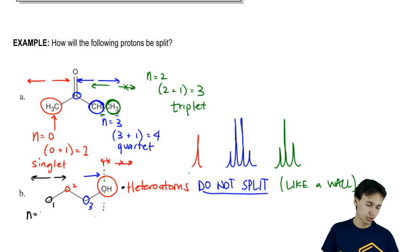That means N equals 2, meaning 2 plus 1 equals 3, so proton type 1 should be a triplet. Hopefully all you guys got that.